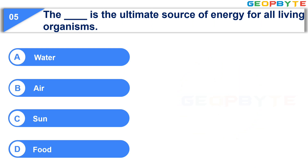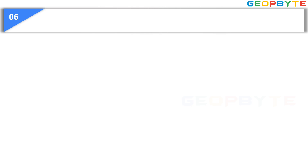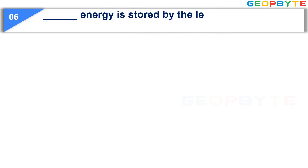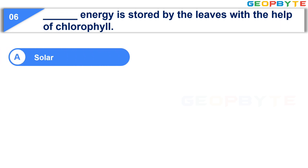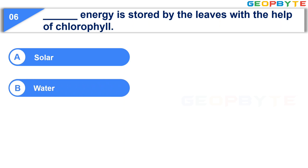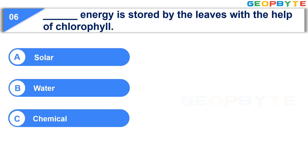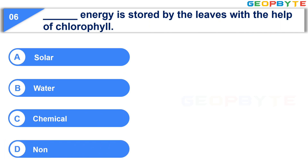Your time is up and the correct answer is Option C, Sun. The next question is: Dash energy is stored by the leaves with the help of chlorophyll. Option A: Solar. Option B: Water. Option C: Chemical. Option D: None of these. Your time starts now.